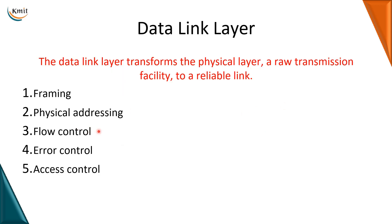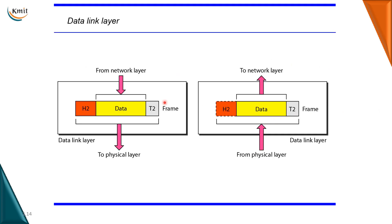Flow control means that a fast sender should not overwhelm a slow receiver — it should not send more than the receiving capacity of the receiver. The data link layer enforces this flow control mechanism. Error control is about detecting and correcting errors: when frames are lost or damaged, they are retransmitted or recovered through error control mechanisms. The error control information is stored in the trailer at the end of a frame, while the addressing information is in the header.